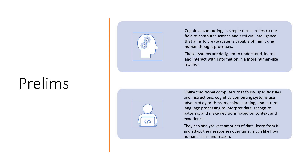Let's first define. Cognitive computing in simple terms is nothing but a field of computer science and artificial intelligence that aims to create systems which are capable of mimicking human thought process. They are designed to understand, learn, and interact with information in a more humanly manner. It has to be more humanly and more interactive — that's the most important point we have to understand.